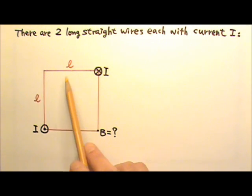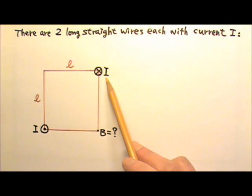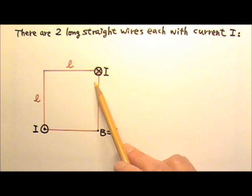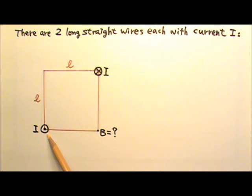There is a square with size L. Two long straight wires perpendicular to the page are at two opposite corners of the square. The current in one wire is I going into the paper. The current in the other wire is the same amount I but going out of the paper. Find the magnitude and direction of the magnetic field at the lower right-hand corner.